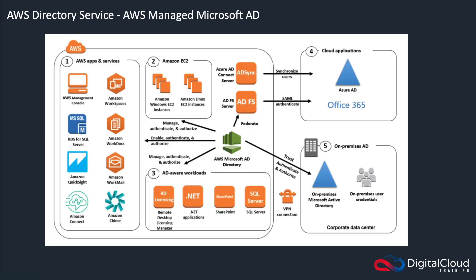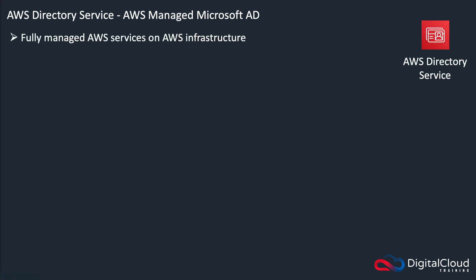Another service is the AWS Managed Microsoft AD. Microsoft have an Active Directory directory — that's their product, used by many organizations. This is an AWS managed implementation, so it's actually a full Microsoft Active Directory database. It's a managed service, so you don't have to worry about the operating system and an EC2 instance — it's a service that's delivered to you. You can use it with all the features that you have with Microsoft Active Directory, and you can create trust relationships between different directory services to allow users to access your resources from another directory. You can also synchronize users and authenticate to Azure AD.